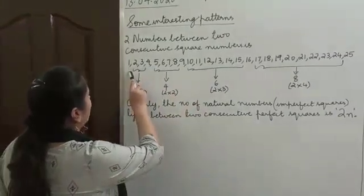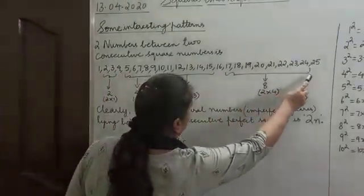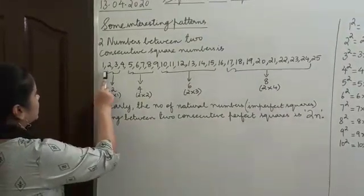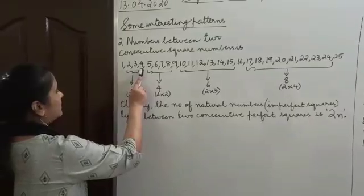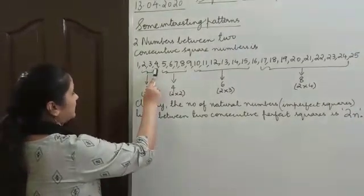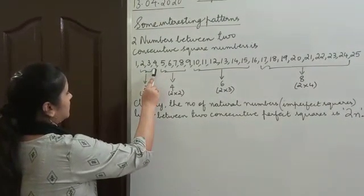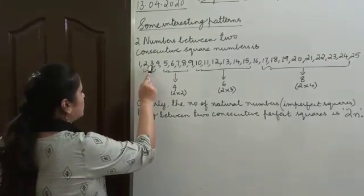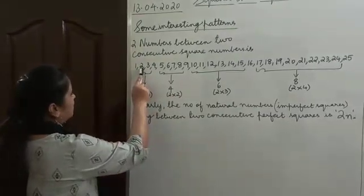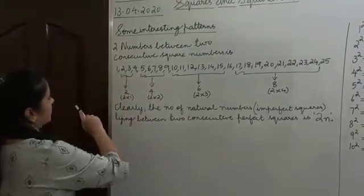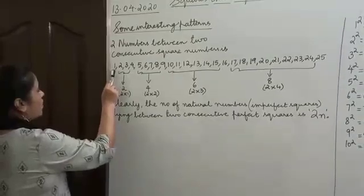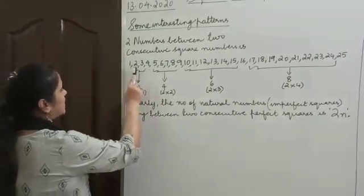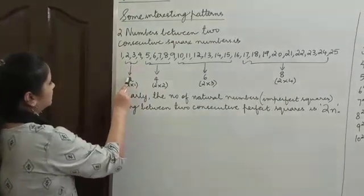Now here, I have listed all the natural numbers from 1 to 25. Now, 1 is a perfect square and 4 is also a perfect square. 1 and 4 are two consecutive perfect square numbers. Between these two consecutive perfect square numbers, we have 2 imperfect squares: 2 and 3. So between 1 and 4, we have 2 imperfect squares.